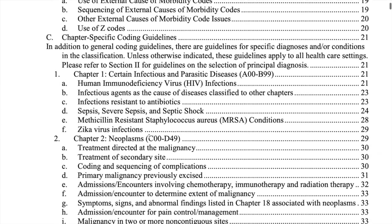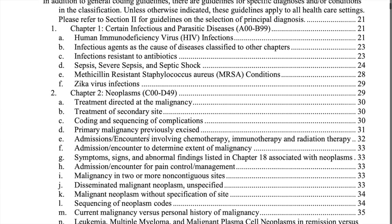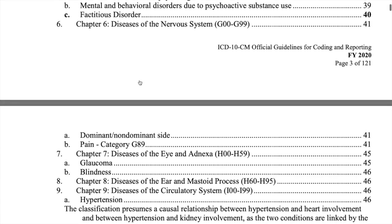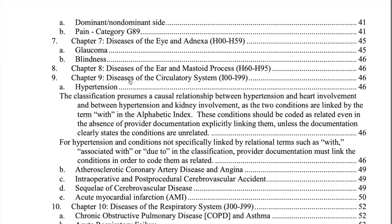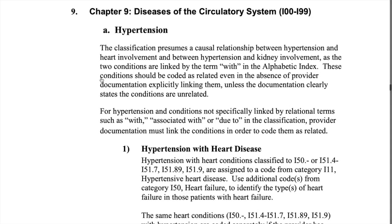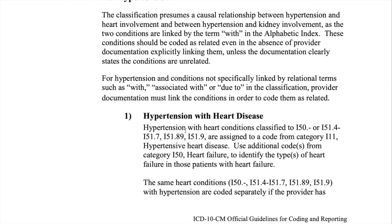Another cool thing you can't do in the front of the code book is you can search and find what you need. In this case, we need the chapter guidelines for Chapter 9. You just click right there and it takes you straight to it — no flipping pages. That book gets heavy! Also, if a doctor is disagreeing with you, you could copy and paste the guideline and email it to them. It's a really nice way to access the guidelines.